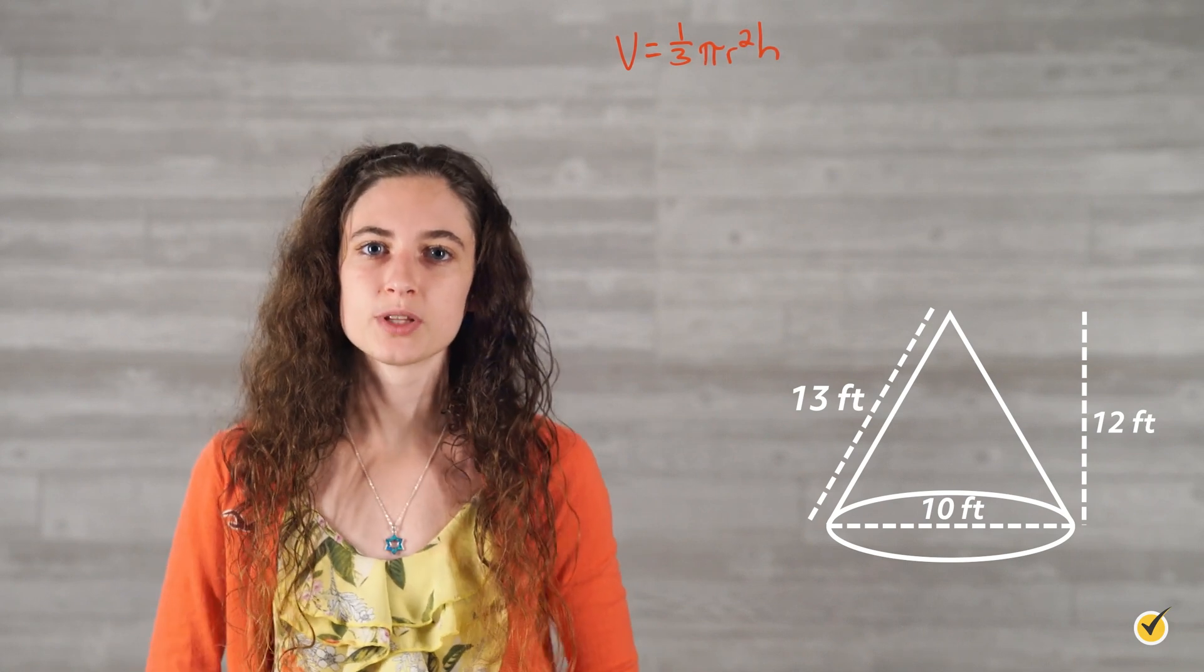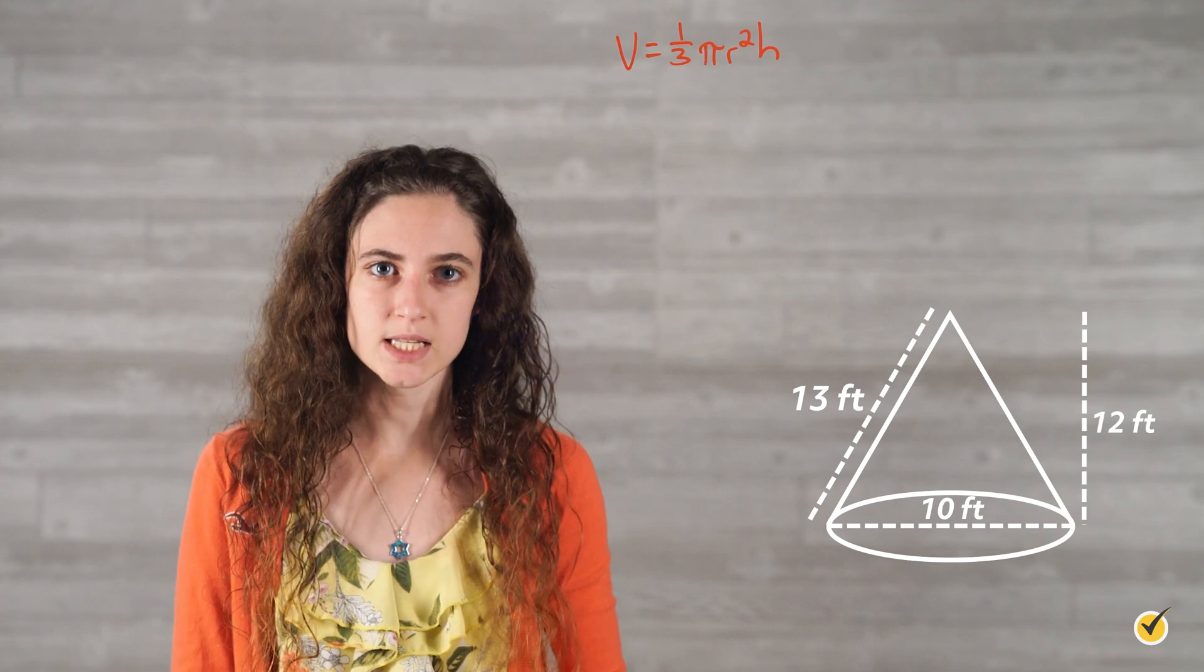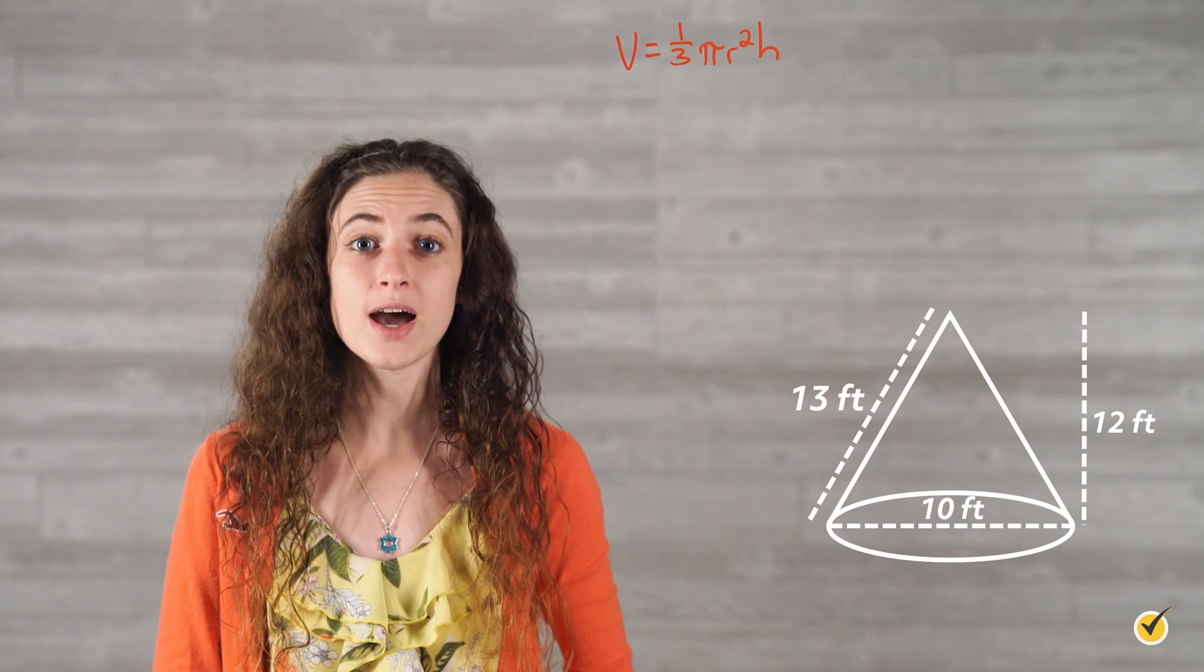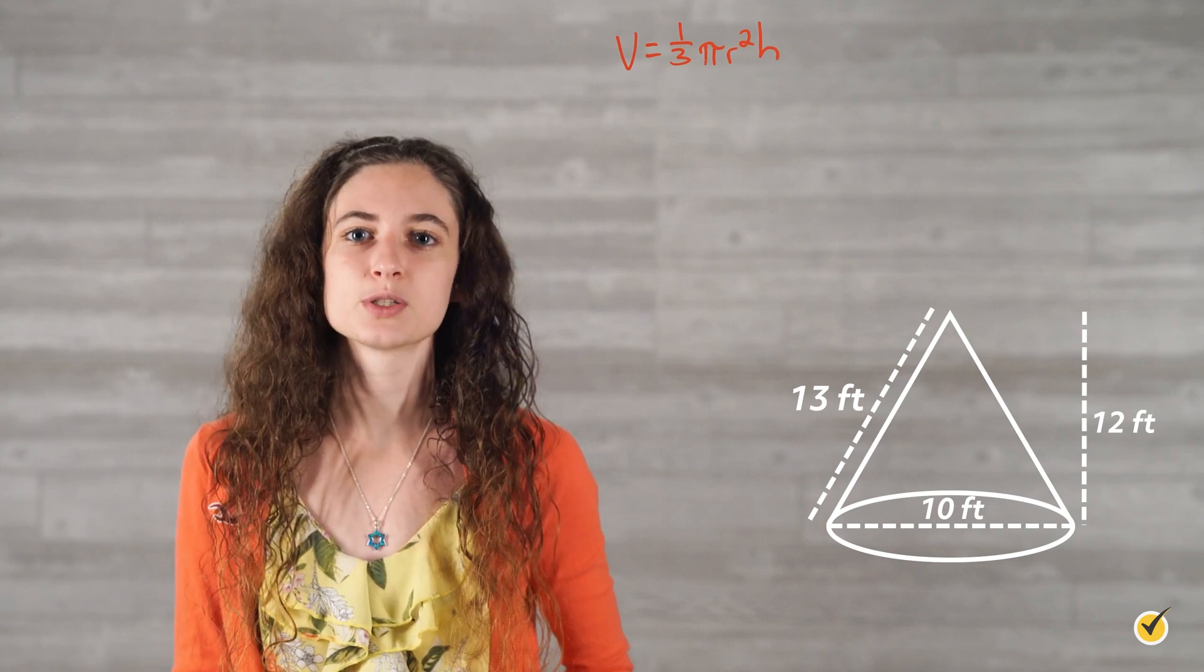Instead, we used what we know about the relationship between diameter and radius. A circle's radius is half of its diameter, so this cone's radius is actually 5 feet. And now, finding the volume is pretty straightforward.